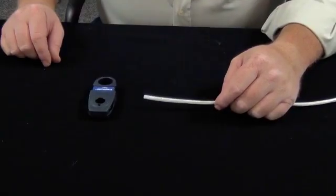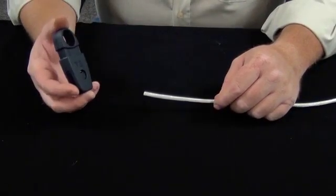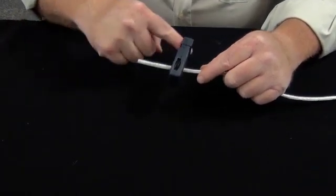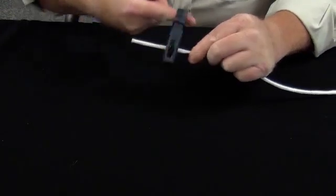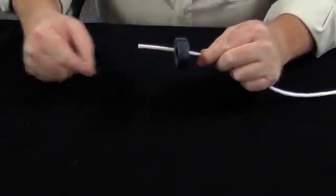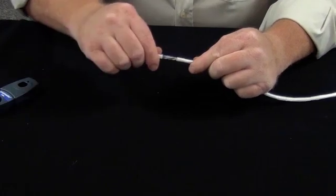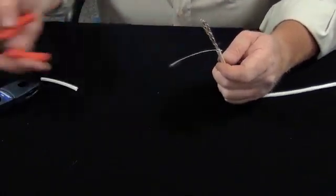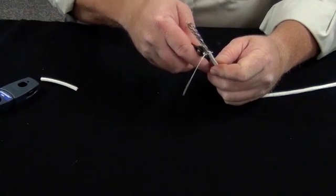Begin by stripping the cable using a category stripping tool. Simply insert the cable into the stripping tool about 2 inches and spin the stripper. Then remove the stripping tool and pull the installation off. You'll notice that there's a strip string inside the cable. You'll want to cut that off with a pair of wire cutters.